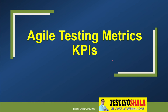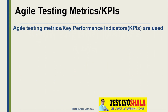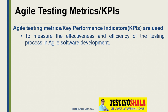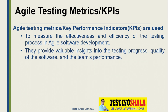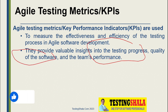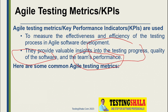Welcome back. In this video we will learn about the key metrics or KPIs used in agile testing. There are various key performance indicators or metrics normally used in agile testing methodologies to measure the overall effectiveness and efficiency of the testing processes. Using these metrics or KPIs we can easily measure overall testing progress, software quality, and team performance.